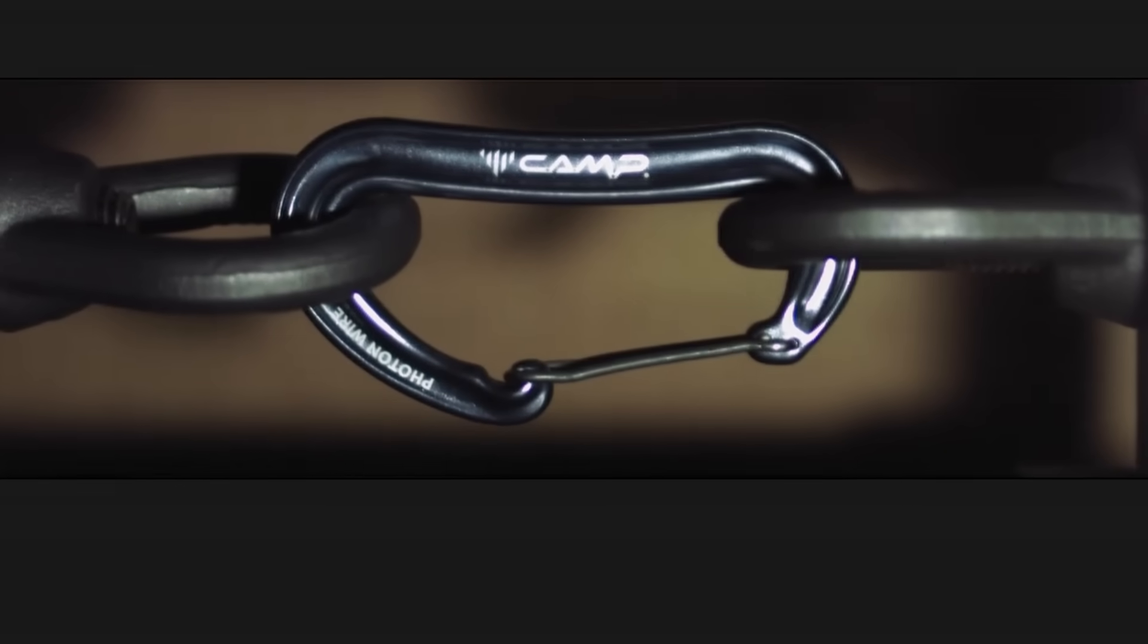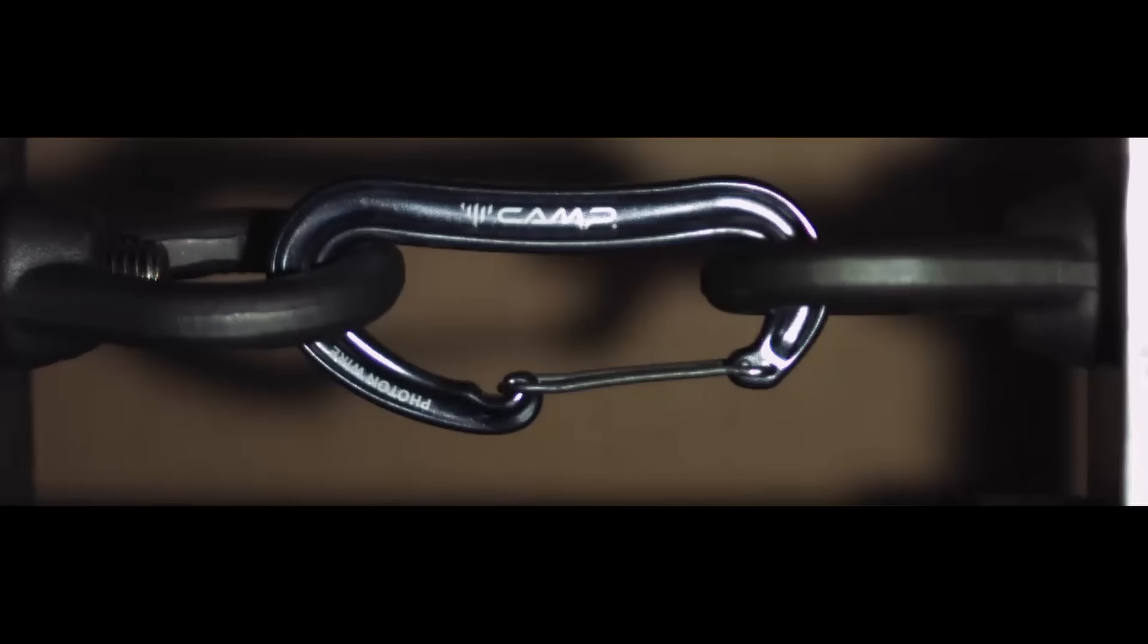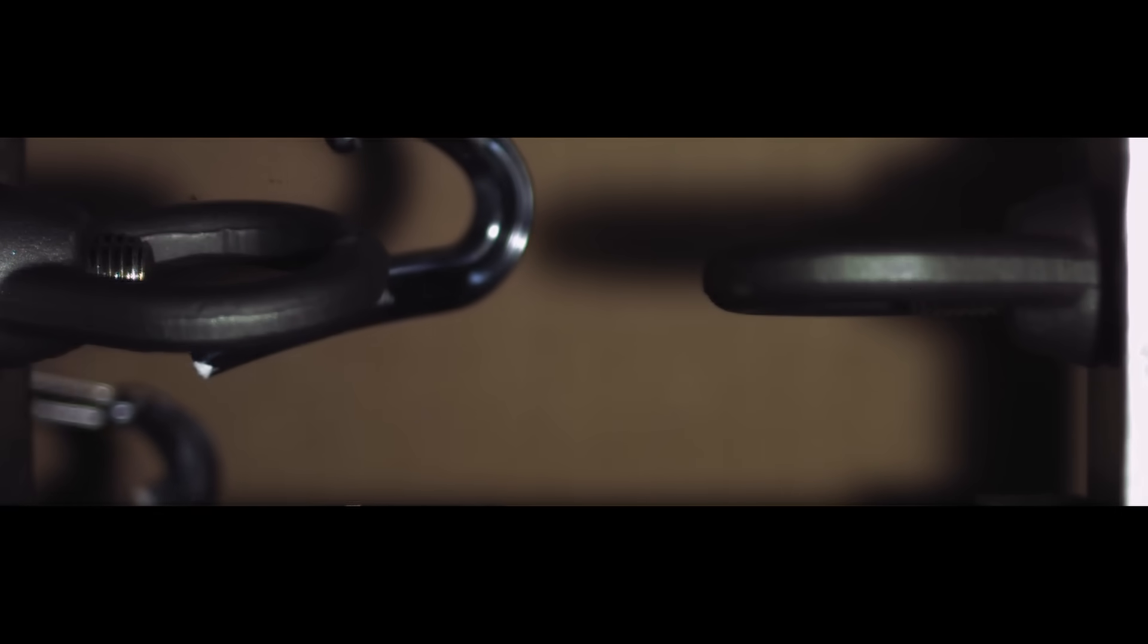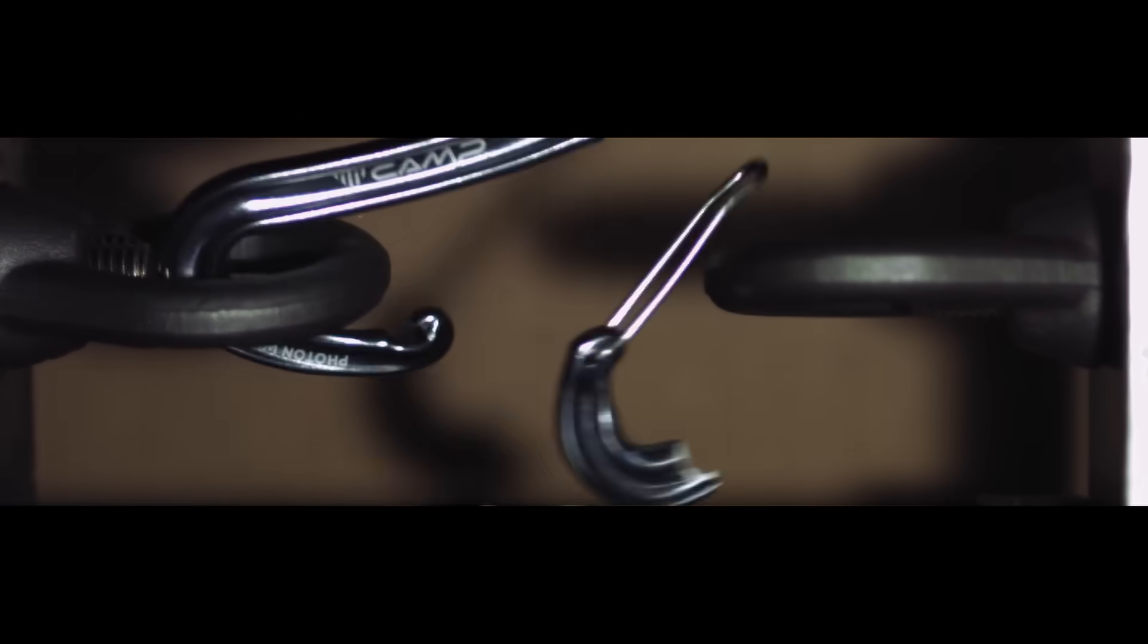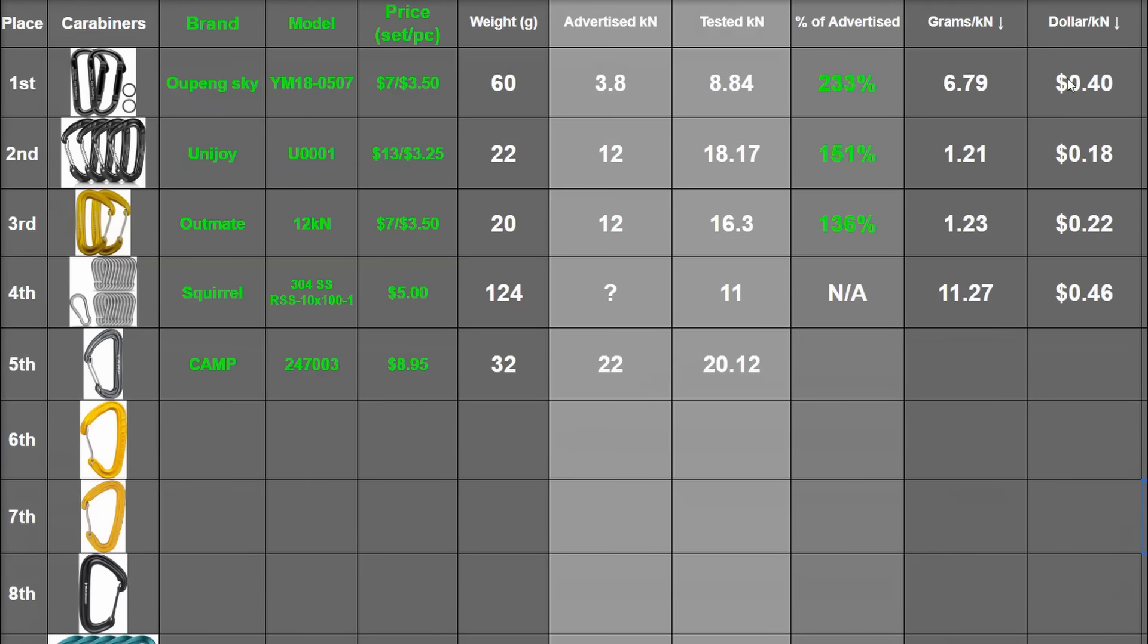It's insane how quickly these things let go when they do. Check out this reverberation on the arm after breaking. Some quick maths says that the first few microseconds the pieces are flying off these carabiners, approaching the speed of a gunshot. Crazy. This camp though, 20.12 kilonewtons, that's 92%. Now here, 22 kilonewtons is like 5,000 pounds from a 32 gram piece of aluminum and stainless wire. Maybe that's just where we're at now.